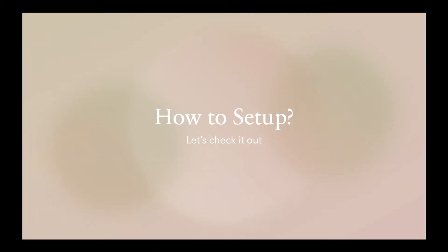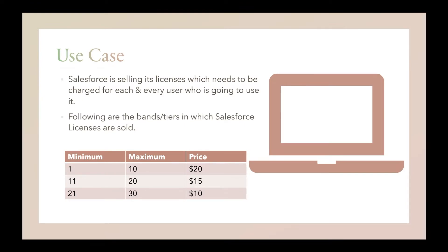Now quickly moving to the next use case: Salesforce is selling its licenses which need to be charged for each and every user who is going to use it — this is a per-unit price. The tiers are: one to ten users costs $20 each; eleven to twenty users costs $15 per user; and twenty-one to thirty users costs $10 each.